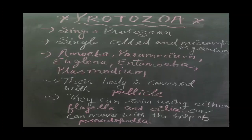The next microorganism is protozoa. Protozoa is a single-celled and microscopic organism. Examples are Amoeba, Paramecium, Euglena, Entamoeba and Plasmodium.